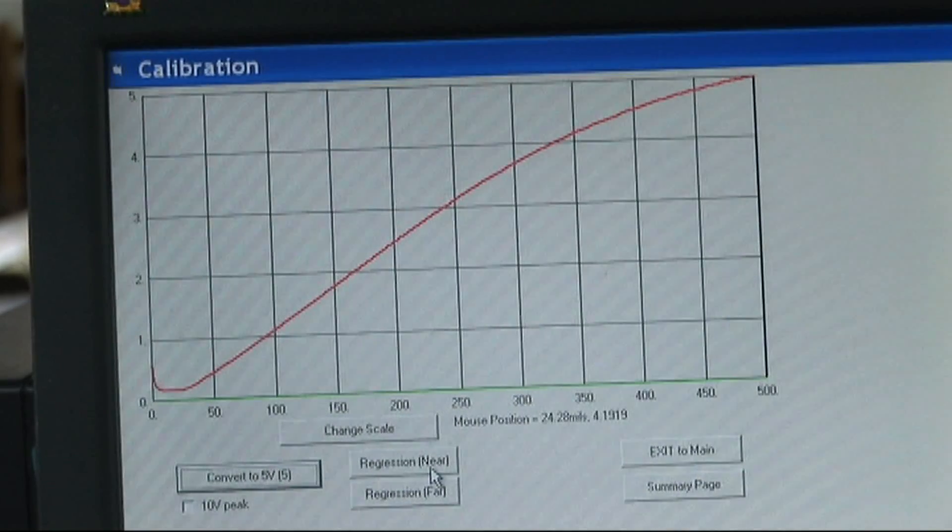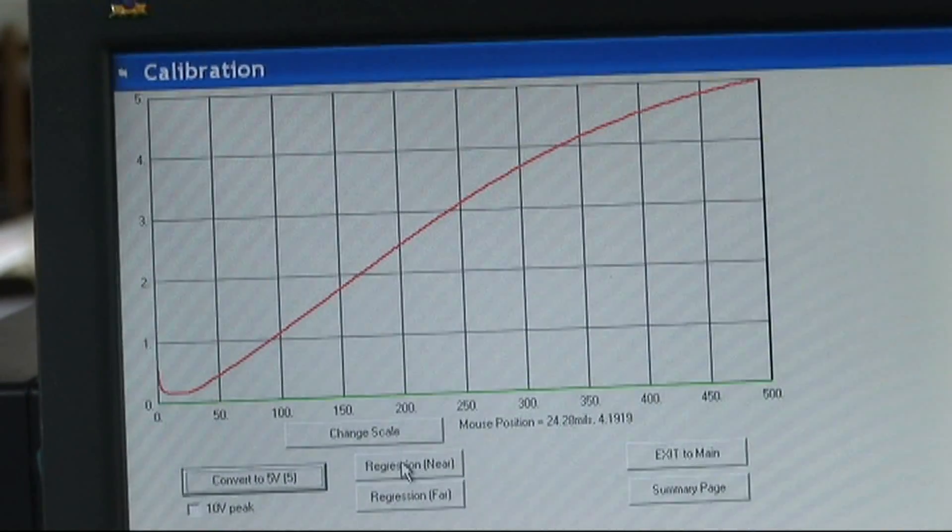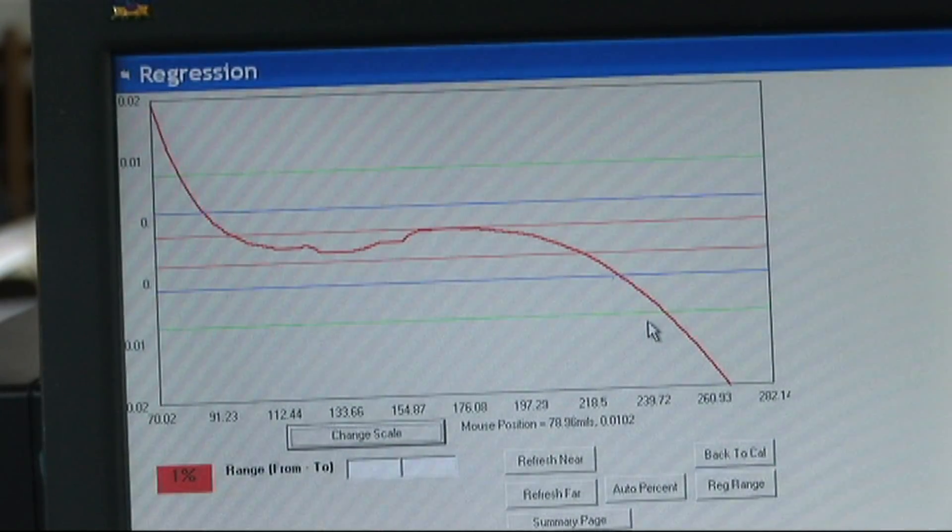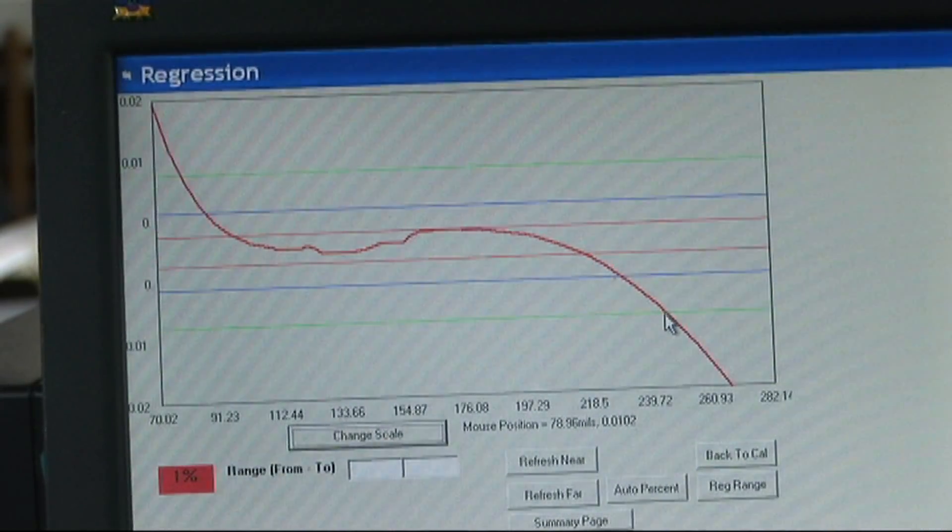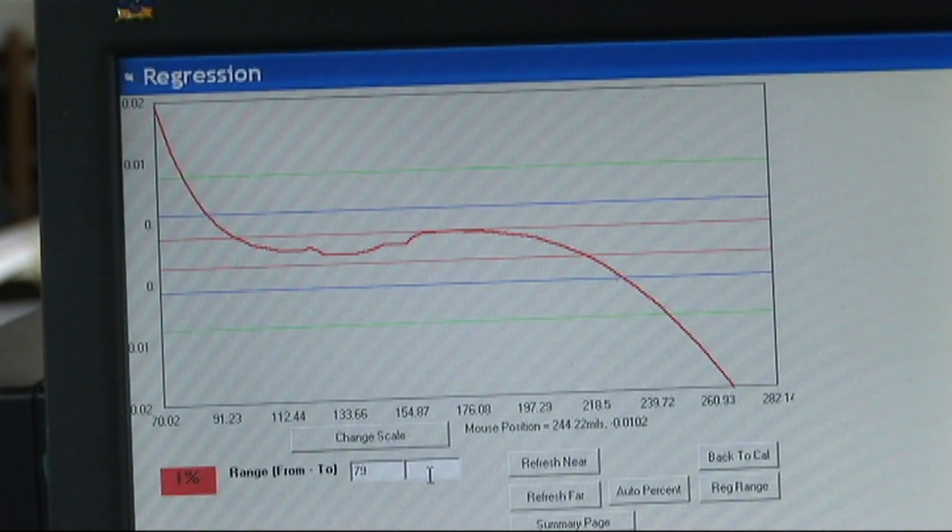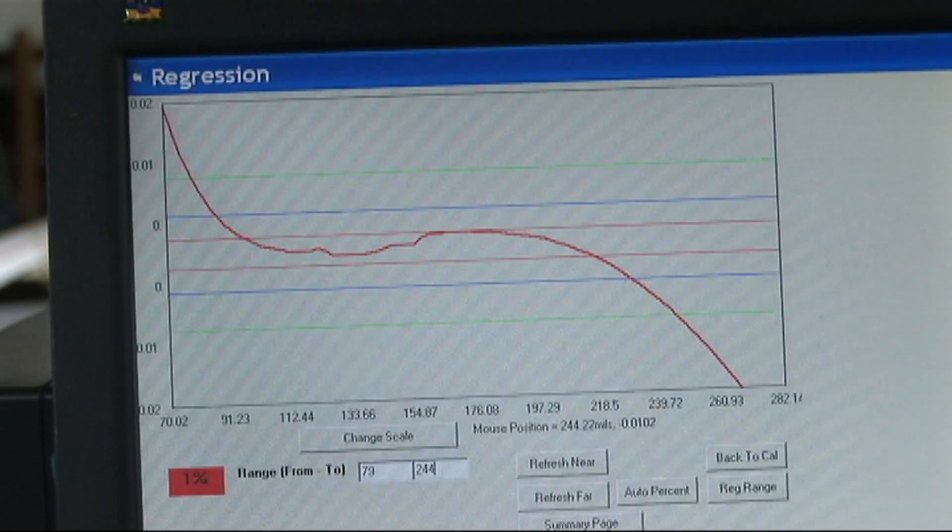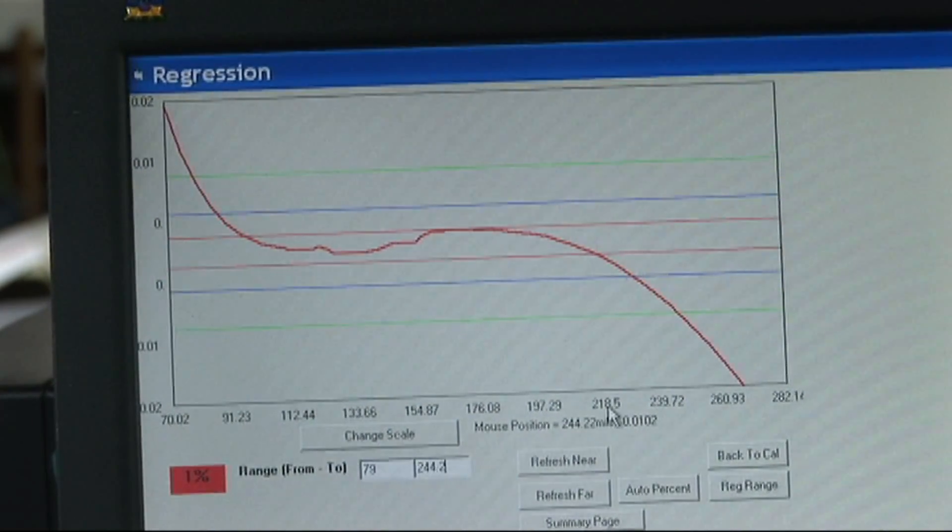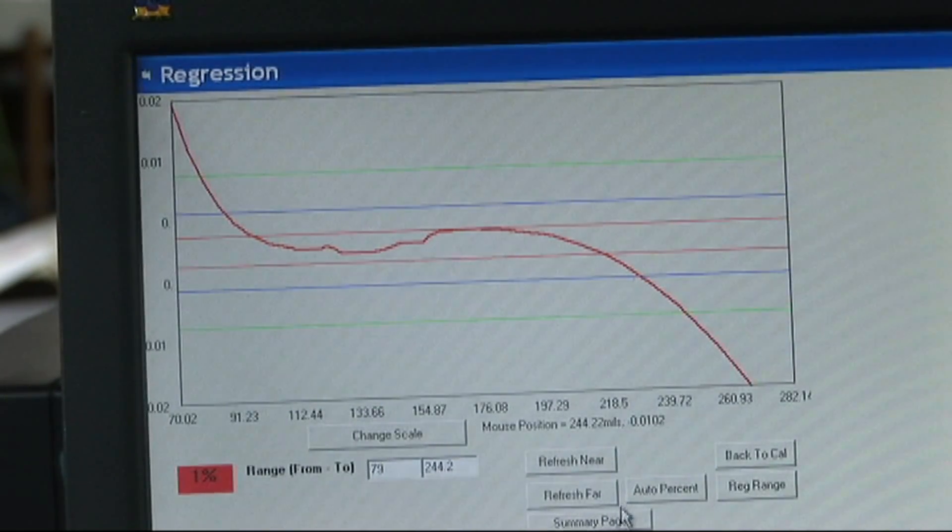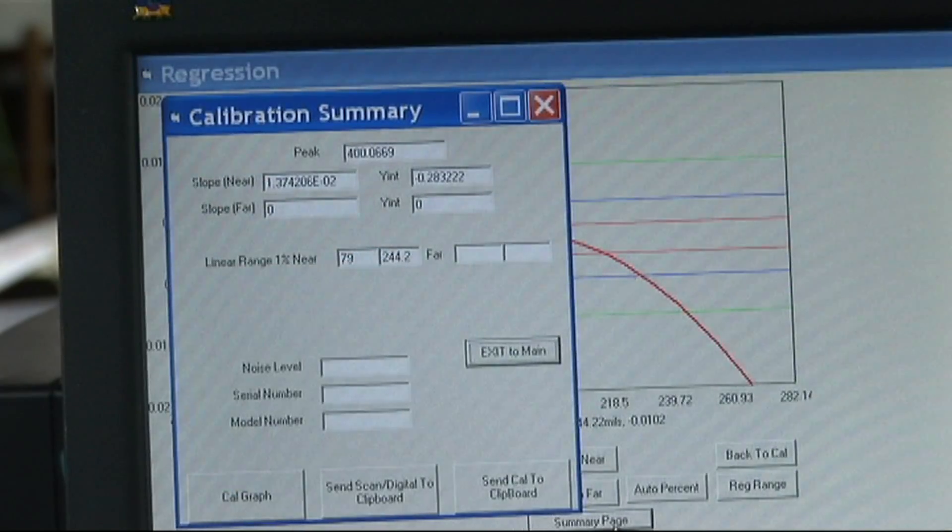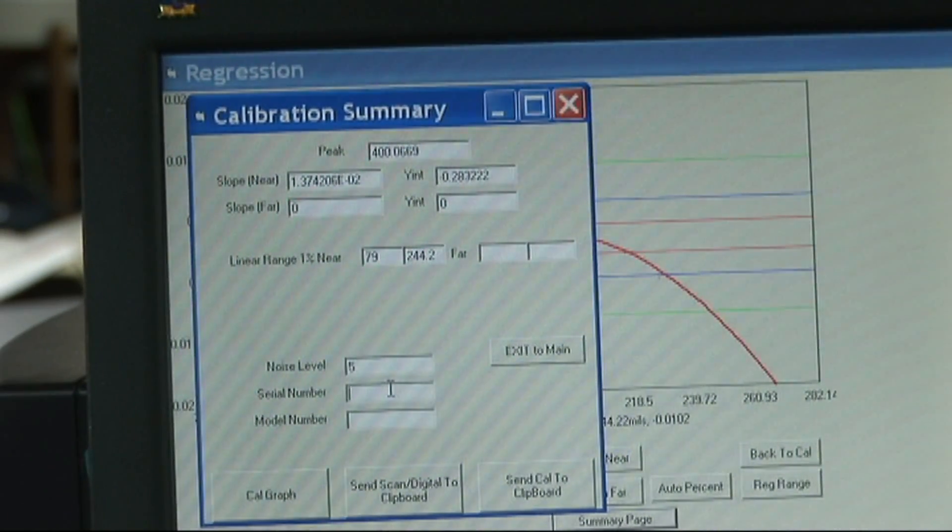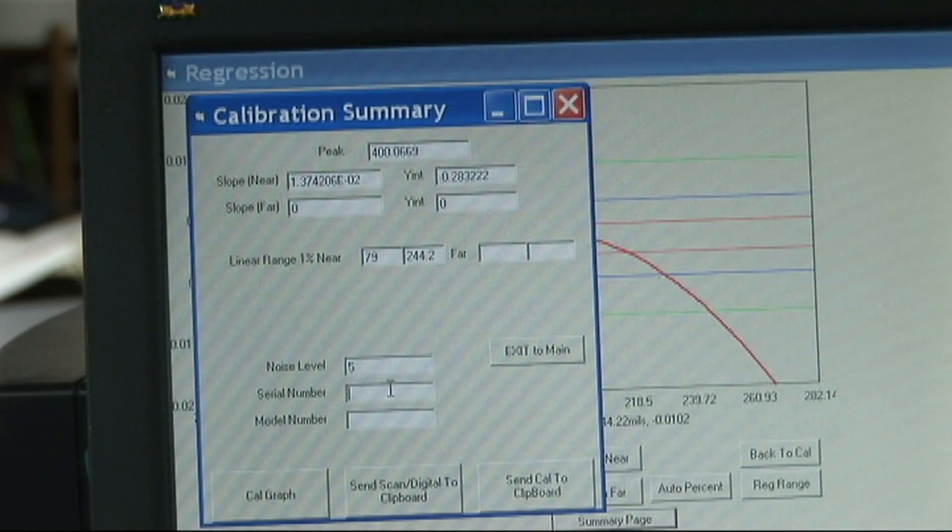But just to show you how we do the calculation, if I click on this regression button here, I could select these limits. I've got 78.96 or 79 mils on the low end, and we'll put 244.2 on the high end. Now what we've done here is defined the linear range. The green lines here show deviation from a straight line, plus or minus one percent. So now when I go to a summary page, we'll put a noise level of the sensor in, let's say five millivolts. This sensor, serial number is 2182.